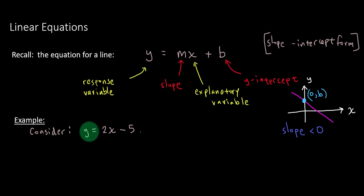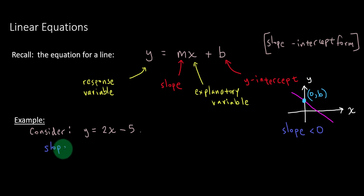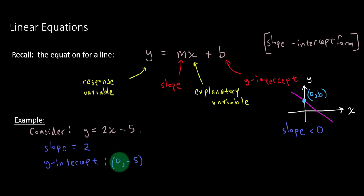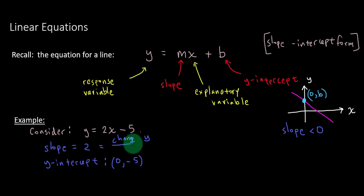Let's consider the equation of the line represented by y equals 2x minus 5. Here, the slope is 2, which is positive. The y-intercept is not just a 5, but a negative 5, so that would be the coordinate (0, negative 5). When we think about slope, a way to interpret it is as the change in y over the change in x — that's why people sometimes call this rise over run.